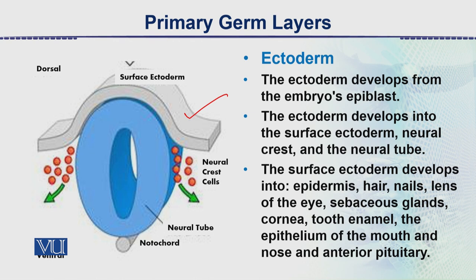The ectoderm develops into the surface ectoderm, neural crest, and the neural tube. The neural crest cells are moving along the neural plate. The neural plate develops into the spinal cord, and attached with it is the notochord — it began as a pre-chordal plate and then develops, moving inward.